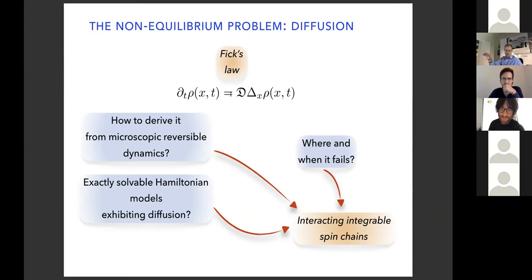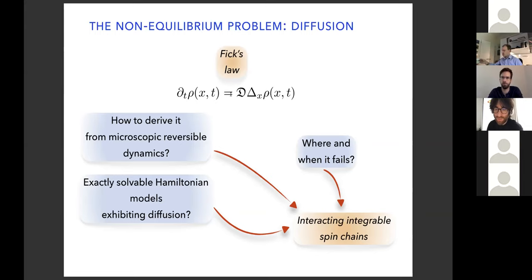It turned out in past years that a nice set of models that can answer these questions are interacting integrable spin chains. Despite integrability, they actually show large-scale diffusion, and despite irreversibility of course, they can also show anomalous behavior — a failure of Fick's law. That's another motivation to study these models.